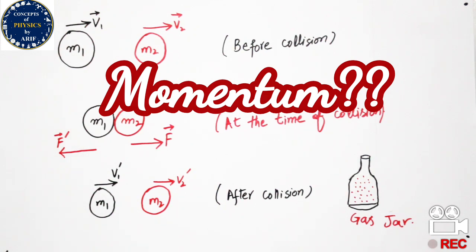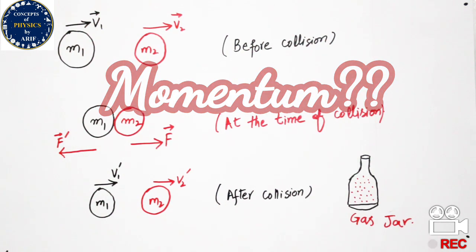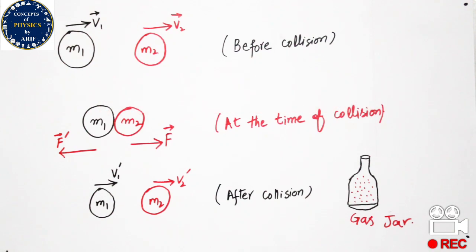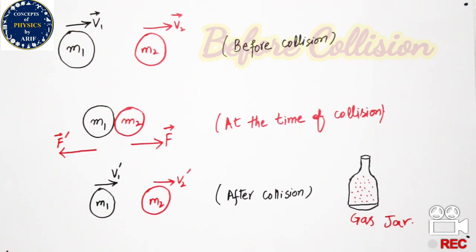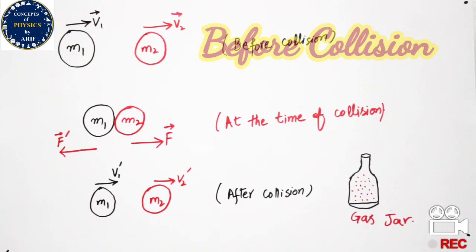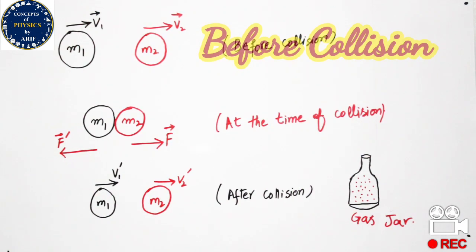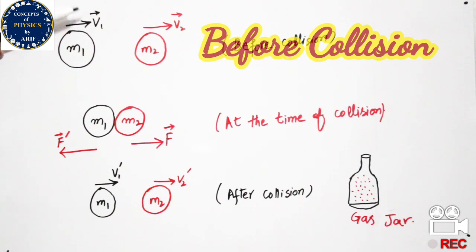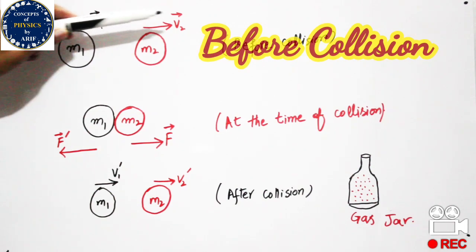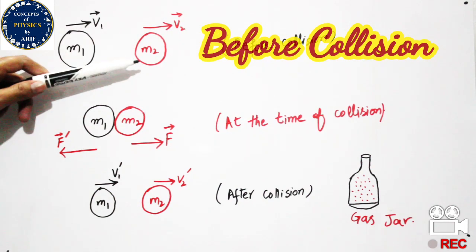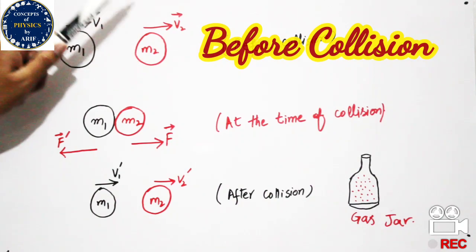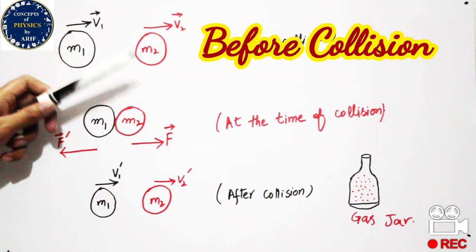Let us consider an isolated system in which there is no external force applied. In this system, there are two balls: ball m1 having velocity v1 is moving in a straight line in the same direction as ball m2, which is moving with velocity v2 in the same direction as m1.